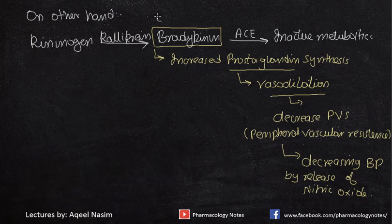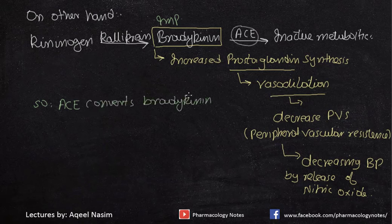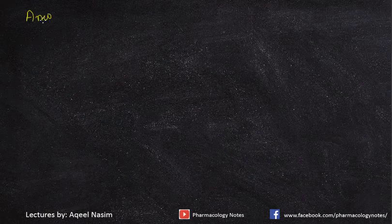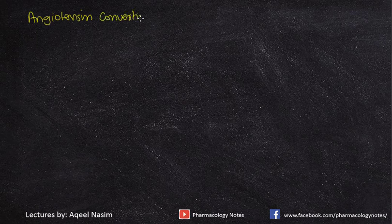This is the normal process that occurs if bradykinin remains. However, ACE metabolizes bradykinin, so there is no decrease in blood pressure via nitric oxide release. ACE converts bradykinin to inactive metabolites, so there is no vasodilation and no decrease in blood pressure. This was the normal mechanism by which ACE works.